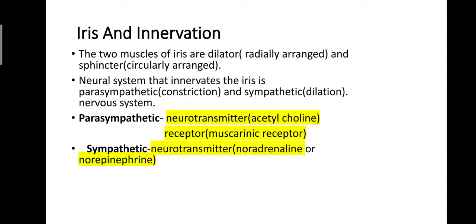An important aspect is understanding the neurotransmitters and receptors involved. In the parasympathetic nervous system, the neurotransmitter is acetylcholine and the receptor is the muscarinic receptor. In the sympathetic nervous system, the neurotransmitter is noradrenaline, also known as norepinephrine.